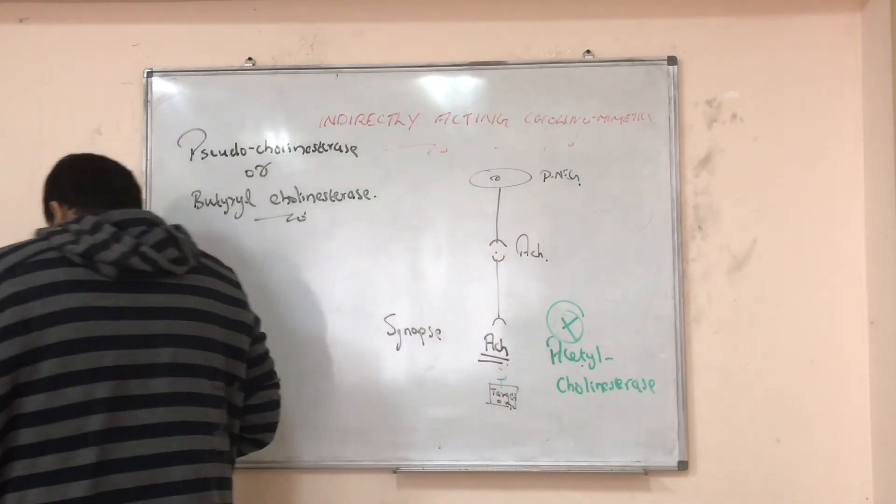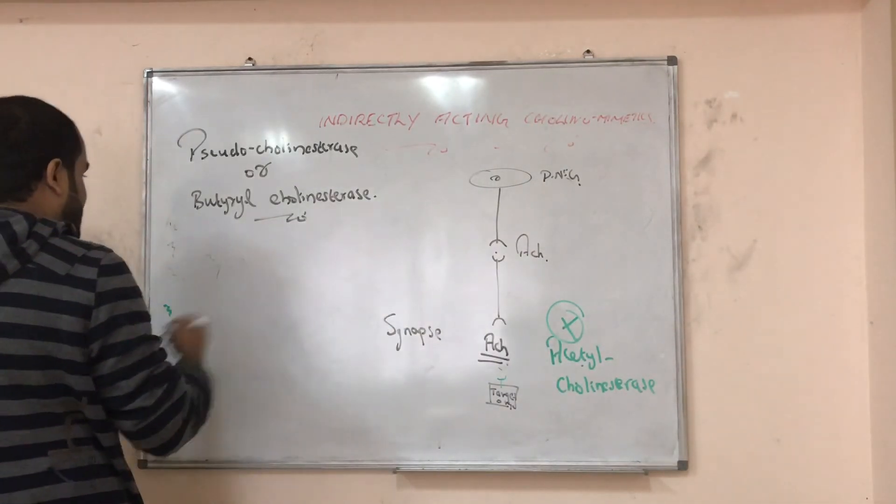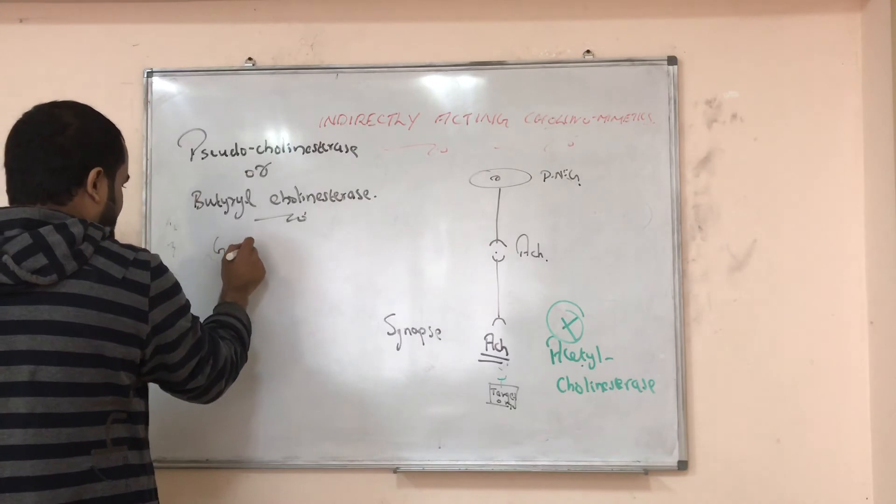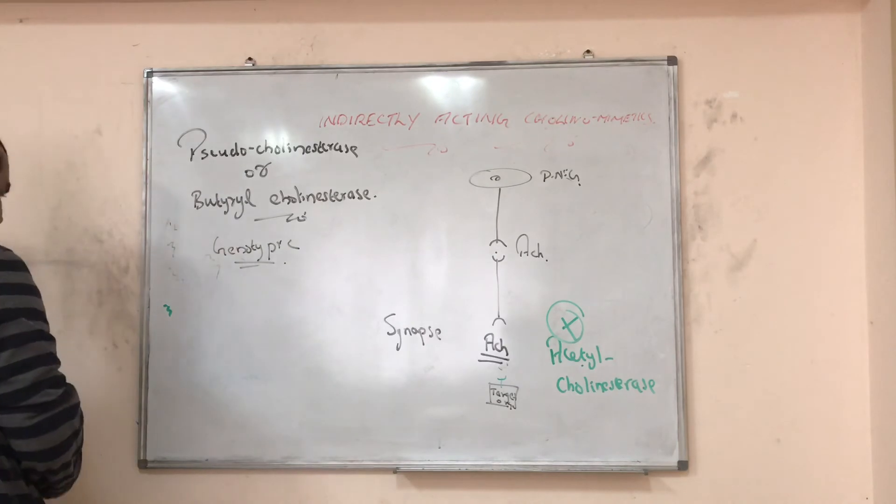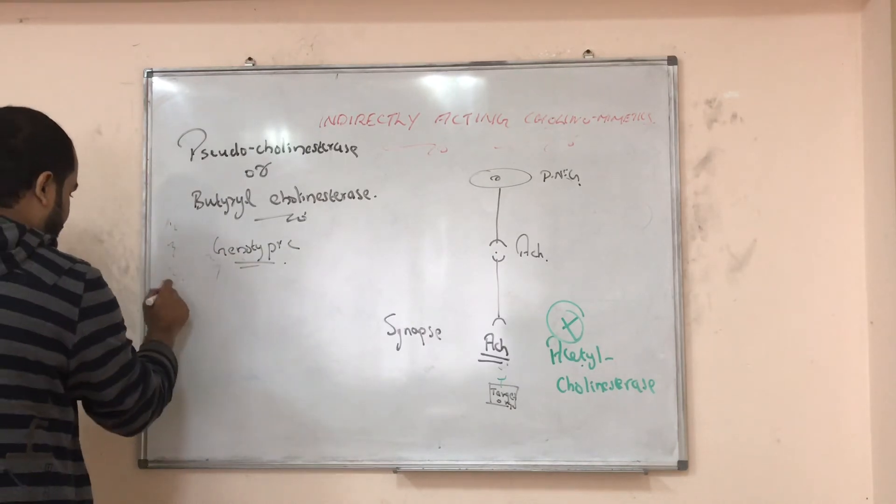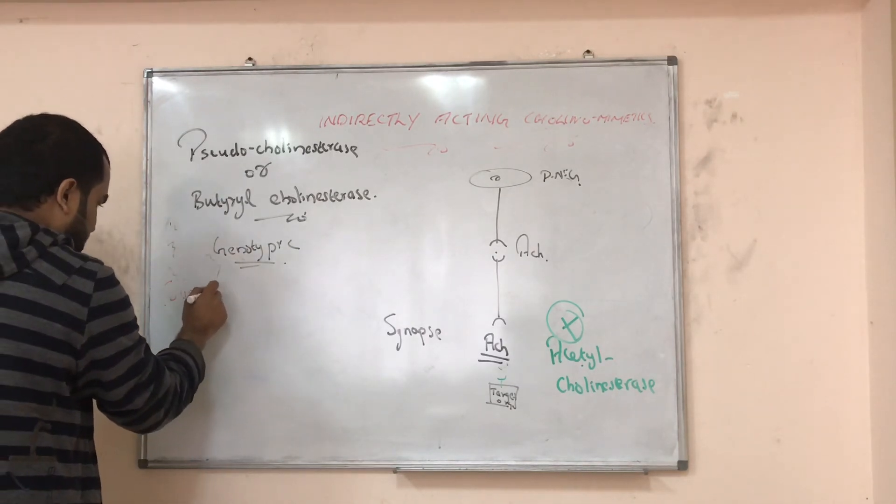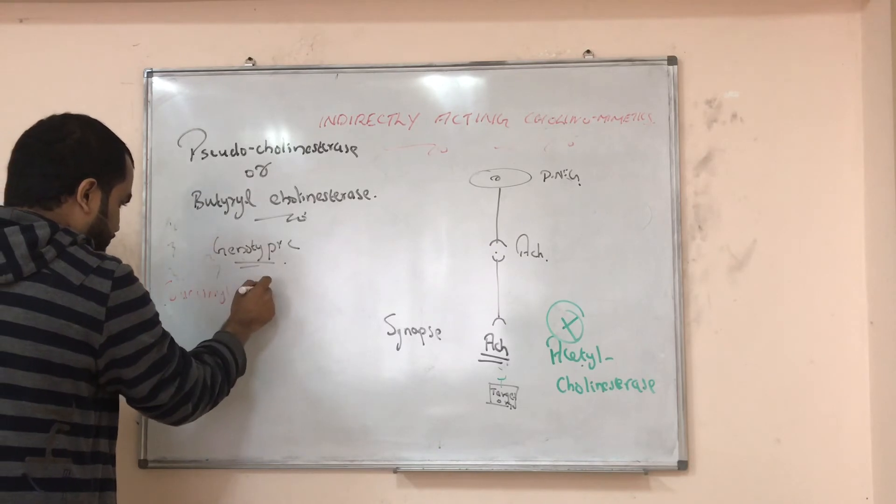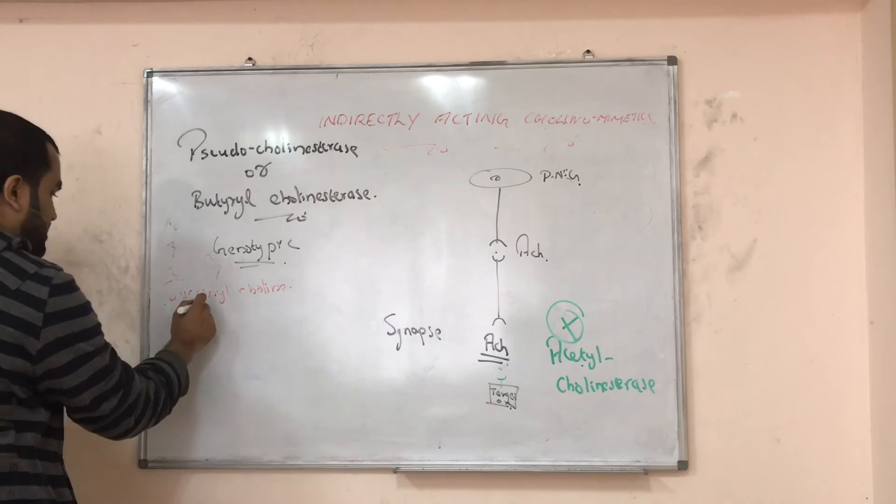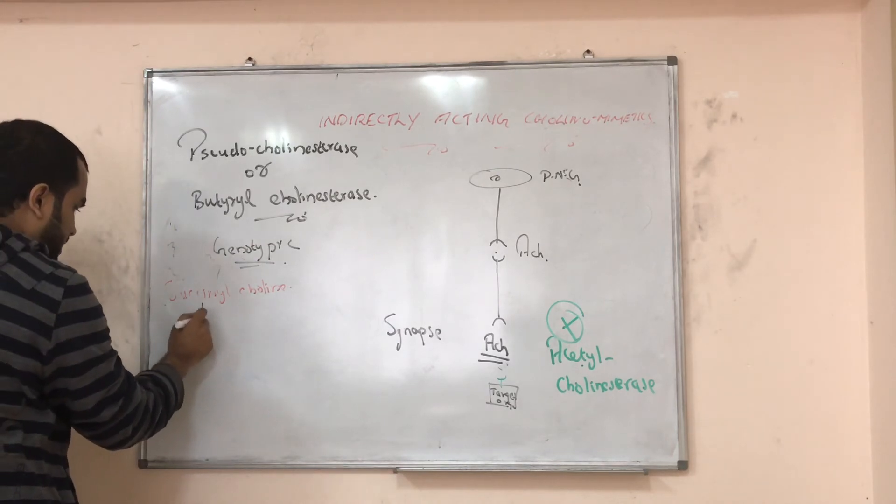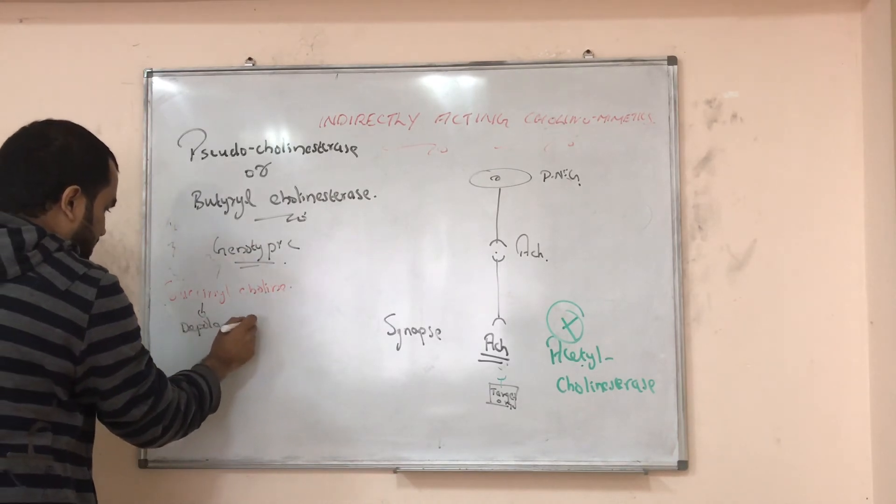So let me give you some examples. As I told you, it is genotypic. Genotypic means it is only present in some people. Some people it is absent. In tracheal intubation, we use a medicine called succinylcholine. Or that is a depolarizing muscle relaxant.